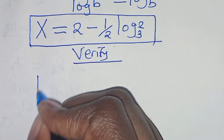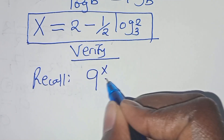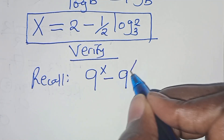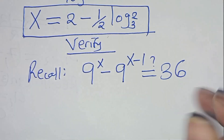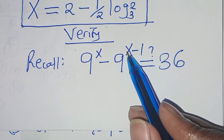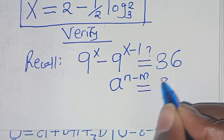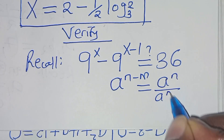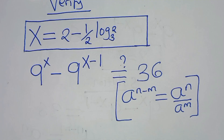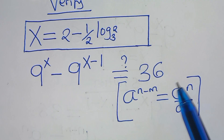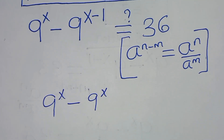Recall we have 9 to the power of x minus 9 to the power of x minus 1, which is supposed to give us 36. We note that 9 to the power of x minus 1 is in the form of a to the power of n minus m, which we can express as a to the power of n divided by a to the power of m. Applying this exponent property, we have 9 to the power of x minus 9 to the power of x divided by 9, equal to 36.